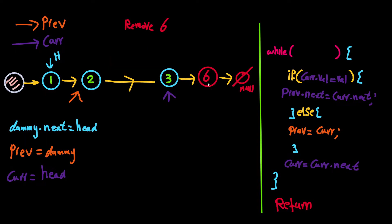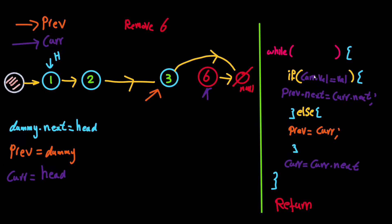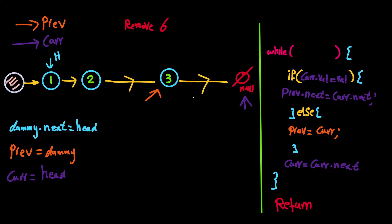Let's continue: current is now at 3. Does 3 equal 6? No — advance previous to 3 and advance current to the next 6. Does 6 equal 6? Yes. Go to previous node (which is 3), set previous.next equal to current.next. Current is at 6 and current.next is null, so previous.next now points to null. Then advance current — nothing points to that last 6, so it's removed.